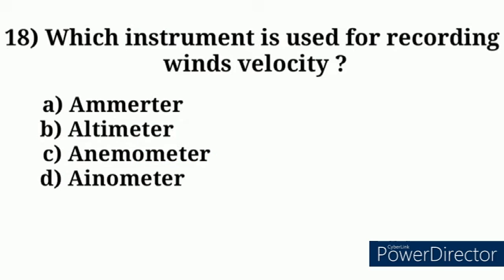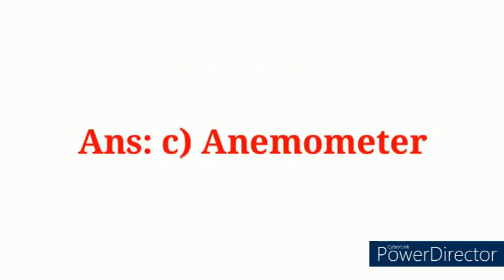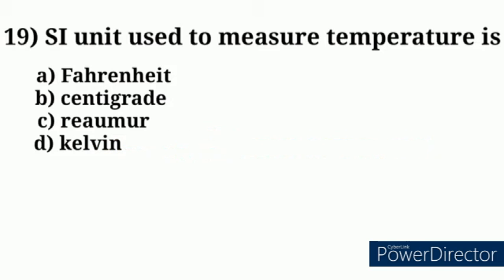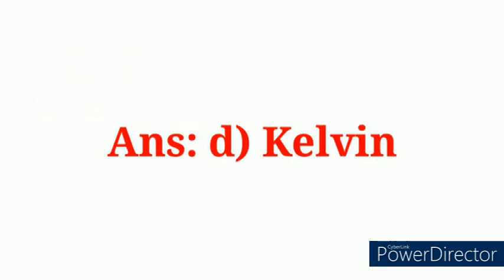Question number 18: Which instrument is used for recording wind velocity? Answer option C: anemometer. Question number 19: SI unit used to measure temperature is? Answer option D: Kelvin.